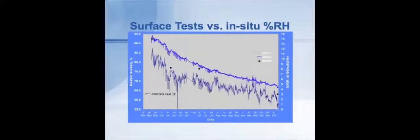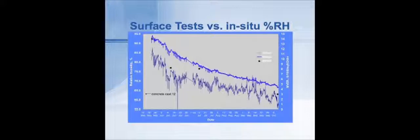I want to talk about the difference in results in more detail between surface tests and the in-situ probes, and why it is important to put the probes at the correct depth into the concrete. This graph shows relative humidity on the left-hand vertical axis versus time across the bottom. These are measurements made in a slab at our facility several years ago, over the course of about five or six months — the dates at the bottom run from May through October. The relative humidity on the vertical axis runs from about 95% down to about 55%. The top blue line shows the relative humidity at 40% of the depth of the slab, going from about 95% when the slab was first cast down to about 75% to 70% after five or six months.